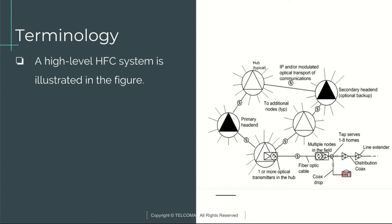The headends are linked using fiber optic cables to hubs which may serve 10,000 to 20,000 customers. The hub may include certain data and voice equipment and will typically convert signals to the RF modulated format needed on the coaxial cable.